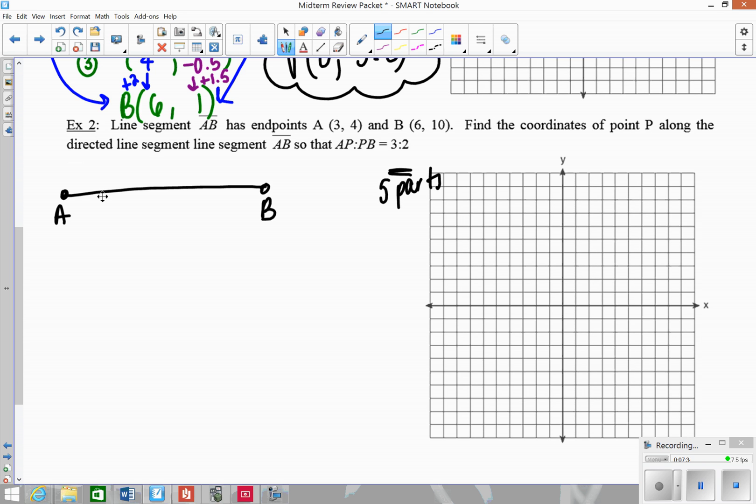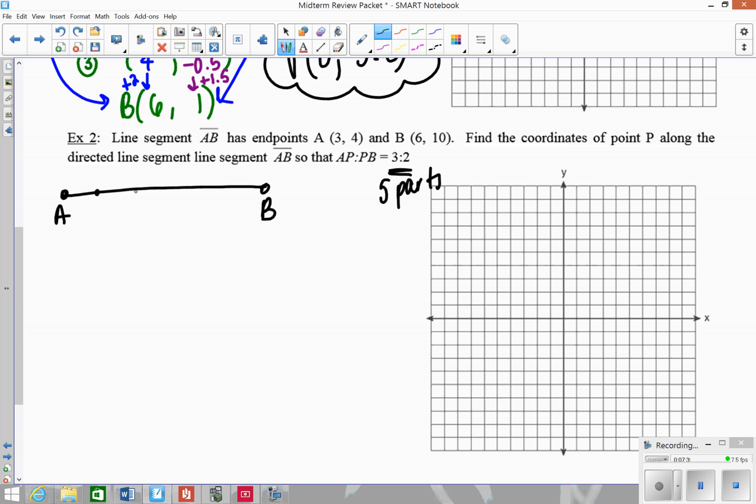So we have 5 parts here, since it's a 3 to 2 ratio. So let's go ahead and divide this into 5 parts. So we have 1, 2, 3, 4, 5. Do your best to try to make them look even. So basically we know that P has to occur after 3 parts, so 1, 2, 3 is where P will be. So I'm looking at here's 3 parts here to 2 parts on this side.